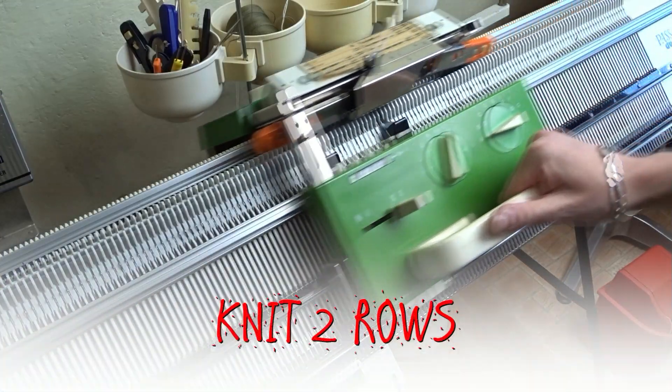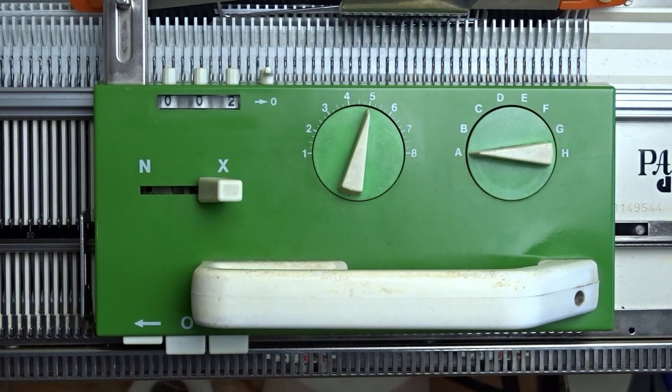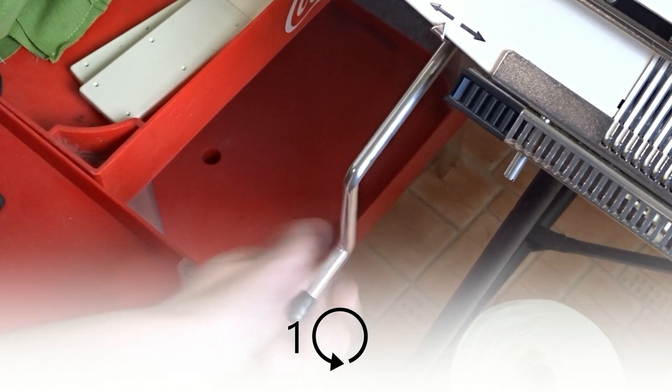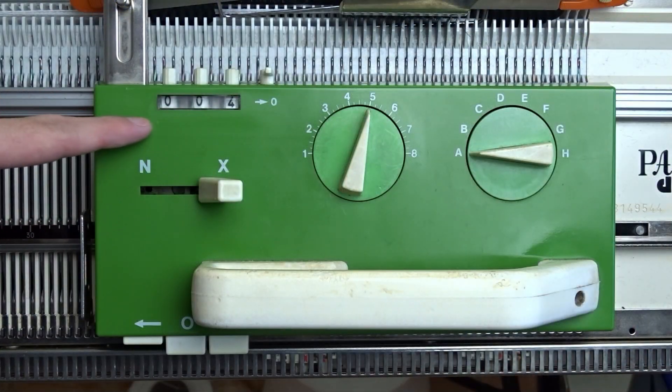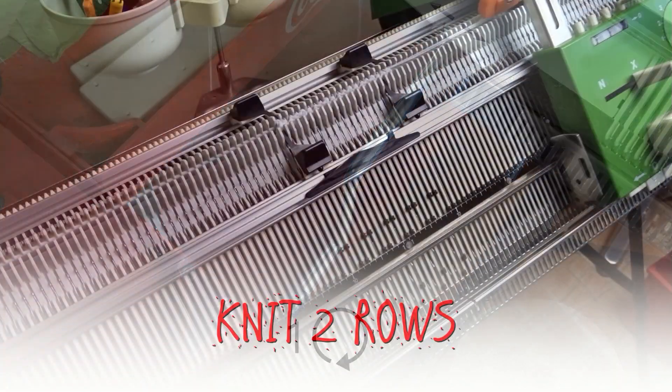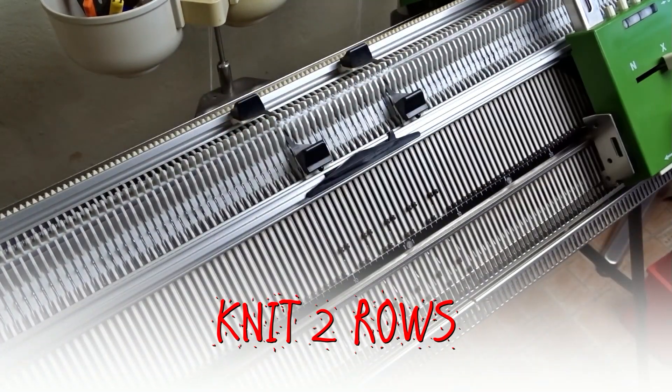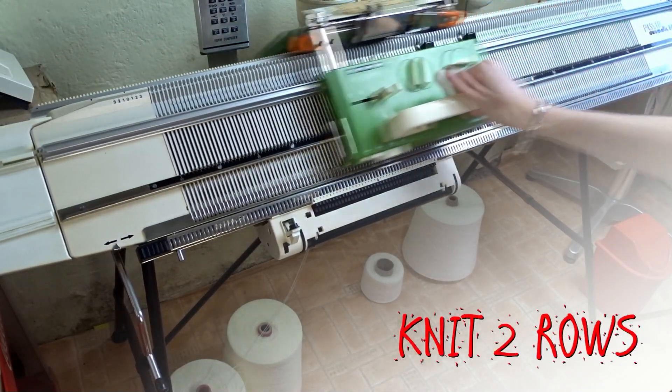Now knit two rolls. Rotate the racking handle one full turn anti-clockwise and knit two rolls. Now repeat the same steps until the strip becomes the desired length.